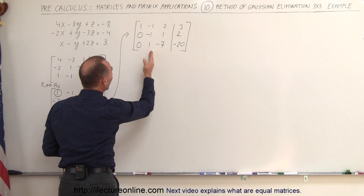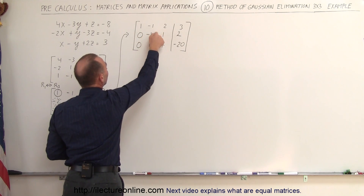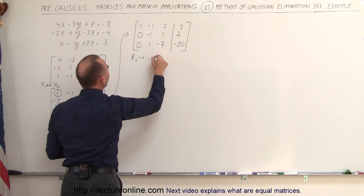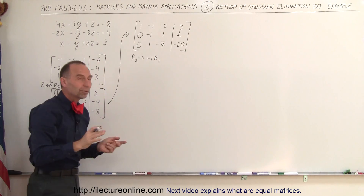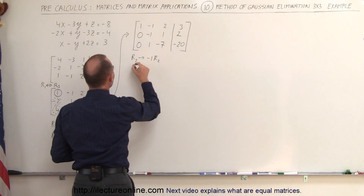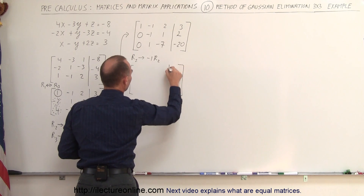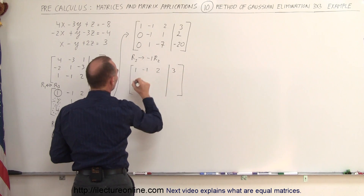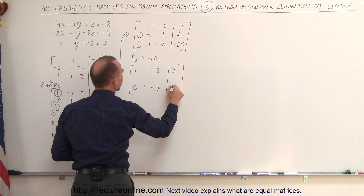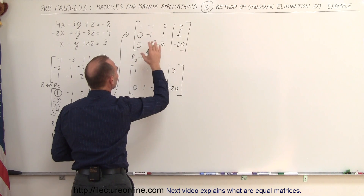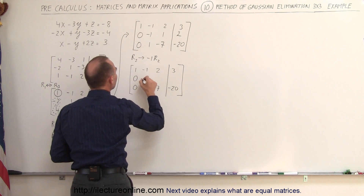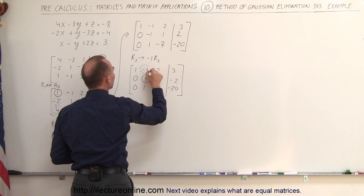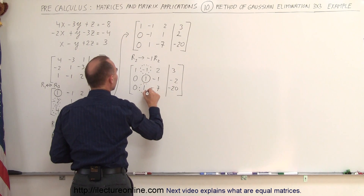Next step is to go to the second column — the middle number — and that needs to be positive 1. So we're going to take the second row and replace it by negative 1 times the second row, simply multiplying the entire row by negative 1. When we do that, the 0 stays, we get a positive 1, a negative 1, and a negative 2. This positive 1 will be used to turn the entries above and below it into 0s.